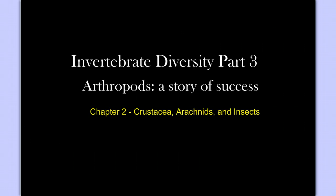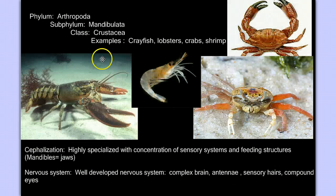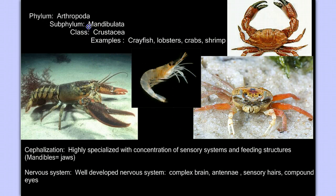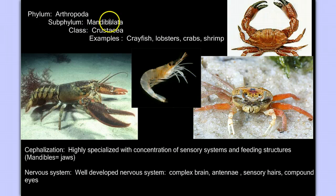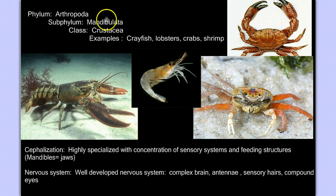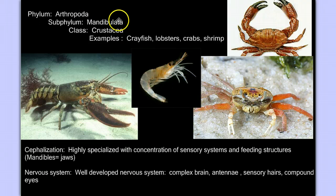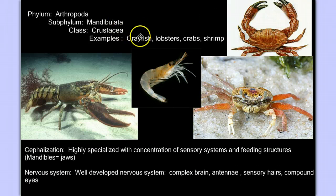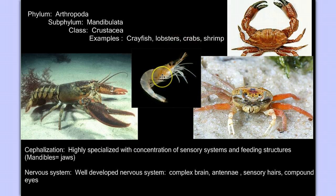We'll start with the crustacea. The crustacea are in the subphylum mandibulata, as we learned last time — class crustacea. So phylum arthropoda, subphylum mandibulata, class crustacea. Examples are crayfish, lobster, crabs, and shrimp.